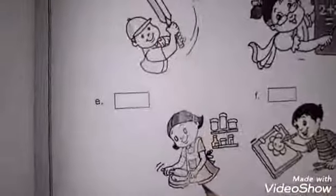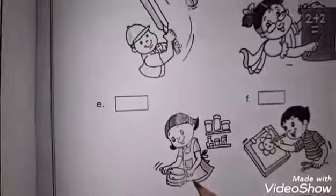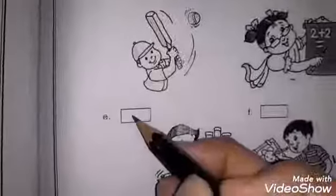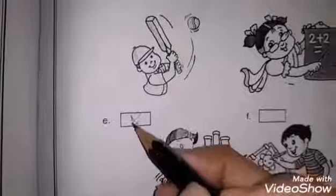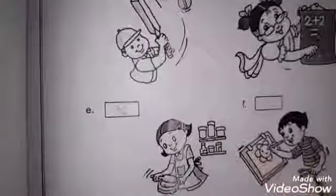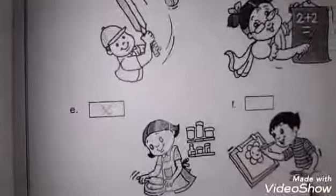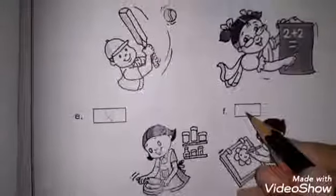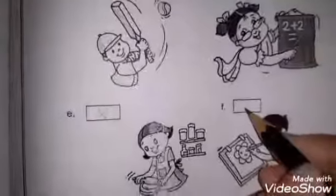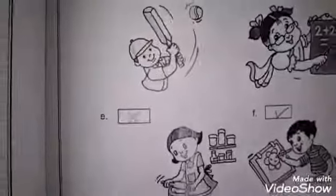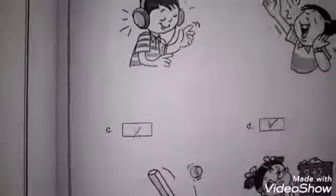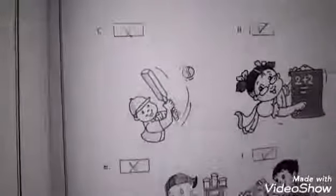E: Cooking. Cooking is not done on the computer, so we will do a cross. F: Running — cross. And drawing: we can draw on the computer, so this is a tick. Okay students, that is all for today. Take care. Allah Hafiz.